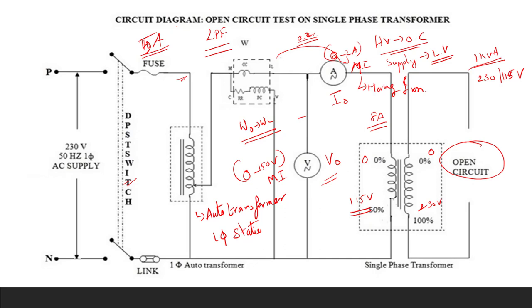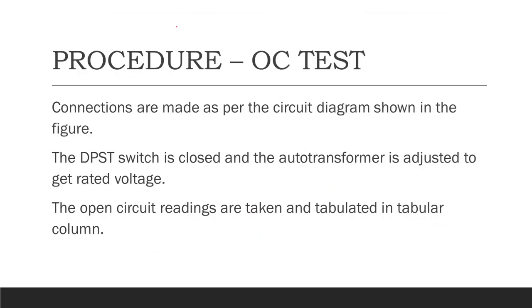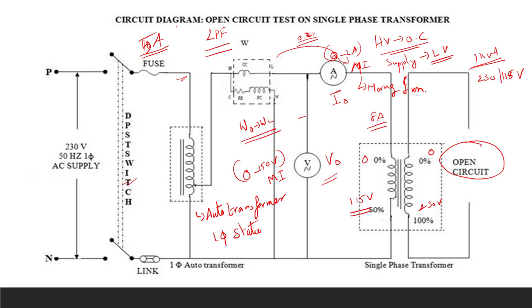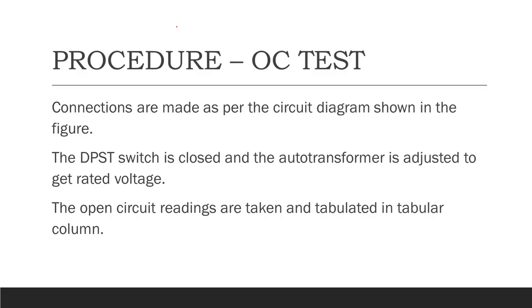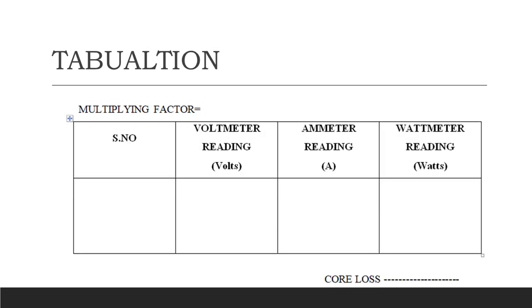This is the open circuit test for the single-phase transformer. The procedure: close the switch and set the rated voltage. From the rated voltage, find the corresponding readings from the voltmeter, ammeter, and wattmeter. In the wattmeter, the actual reading is the product of the measured reading and the multiplication factor. The actual reading will be the core loss value — this is the tabulation for the open circuit test.